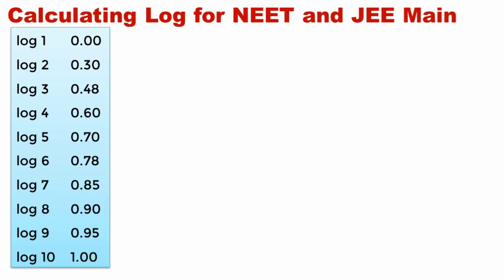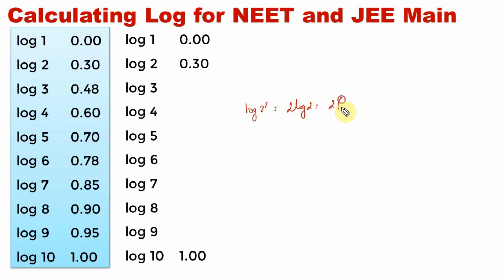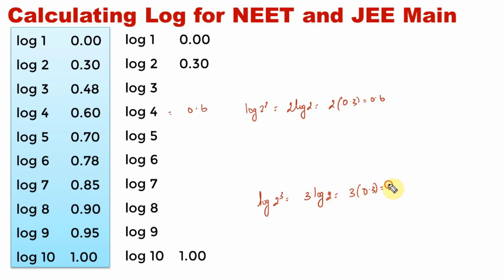Let's look into how we can calculate or remember log values. The minimum you have to remember is: log 1 is 0, log infinity is infinity, and you cannot take a log of a number less than 0. A log between 0 and 1 is negative. Assuming you remember those, log 4 is log of 2 squared, which equals 2 log 2 = 2 × 0.3 = 0.6. Similarly, log 8 is log of 2 cubed = 3 log 2 = 3 × 0.3 = 0.9.